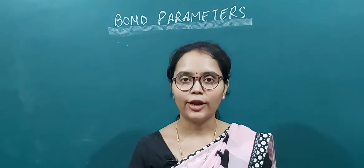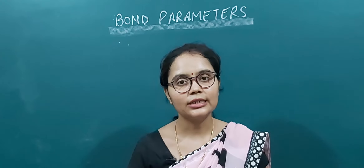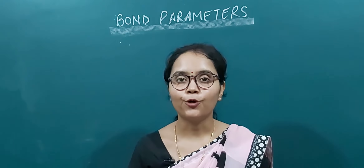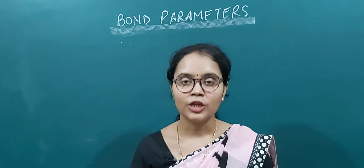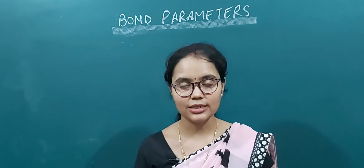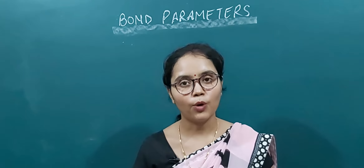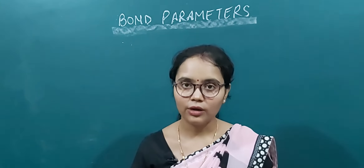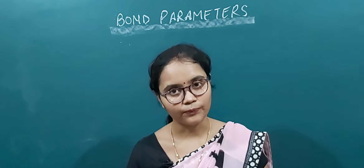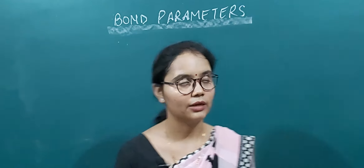Hello dear students, good morning. Today we will discuss the bond parameters by which a covalent bond is characterized. There are four bond parameters: bond length, bond energy, bond angle, and bond order. Let's start with the first one, bond length.